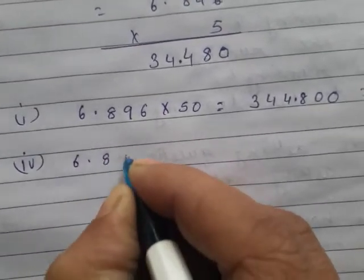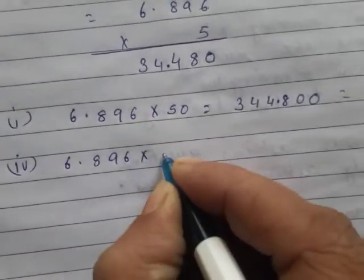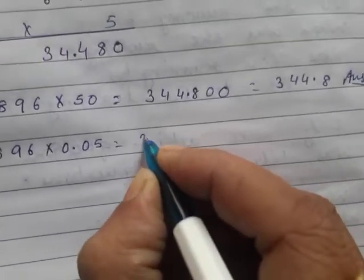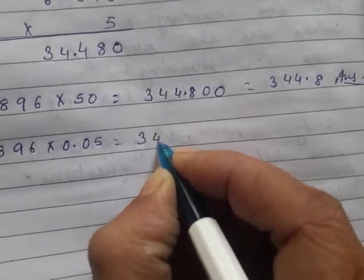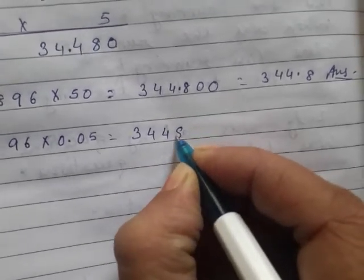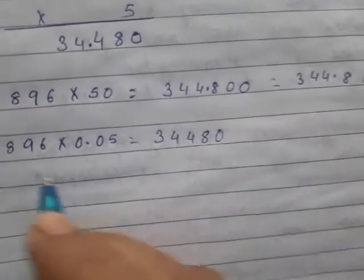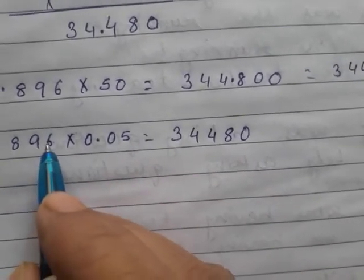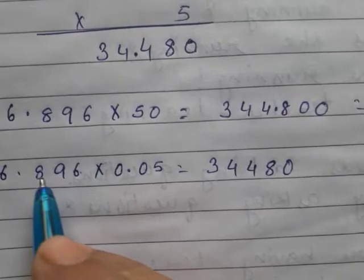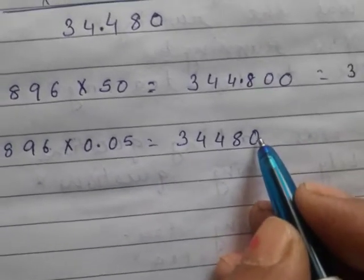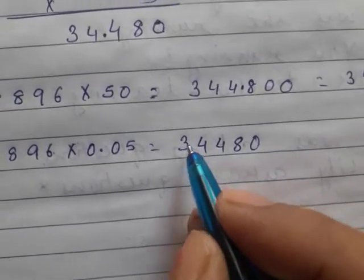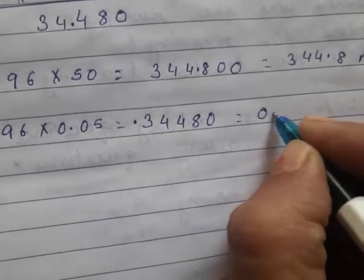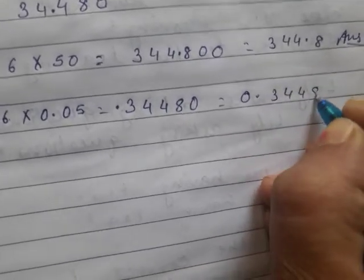Six point eight nine six multiply zero point zero five. The result will be the same, but the decimal will be different. This one, two, three - three digits are the same. So how much is the total? One, two, three, four, five, so our decimal will be one, two, three, four digits. The answer equals zero point three four four eight.